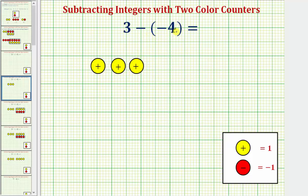And then we have minus negative four, which means you want to remove or take away four red counters. But notice how we don't have four red counters to remove or take away, which means we'll have to introduce zeros.